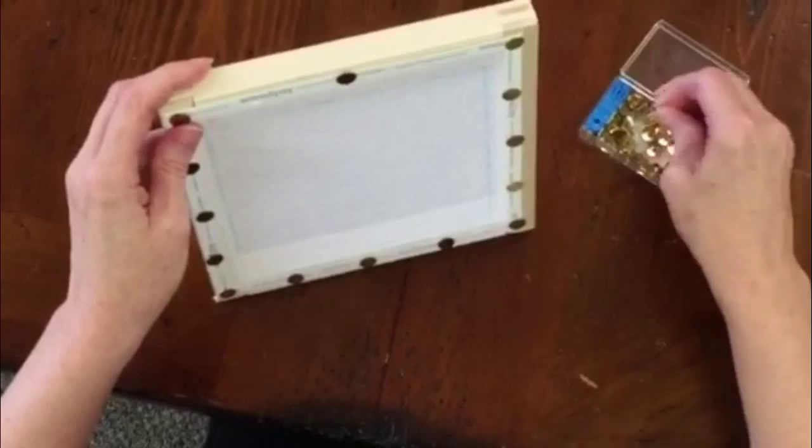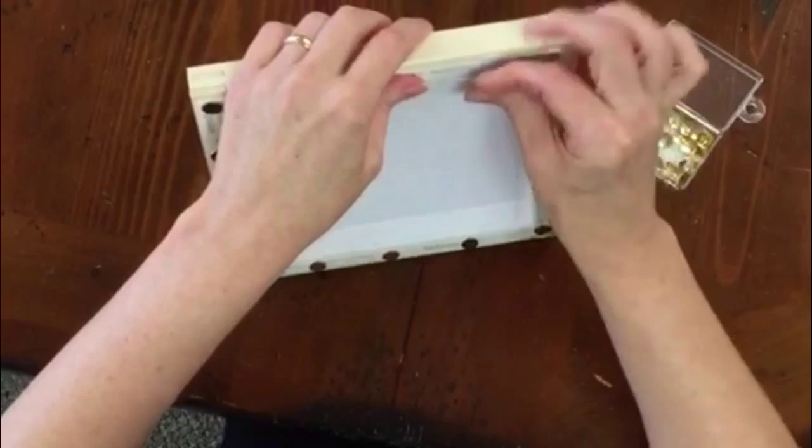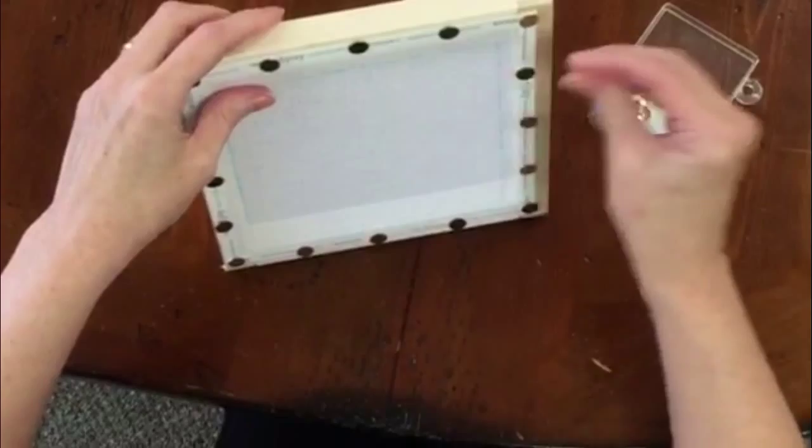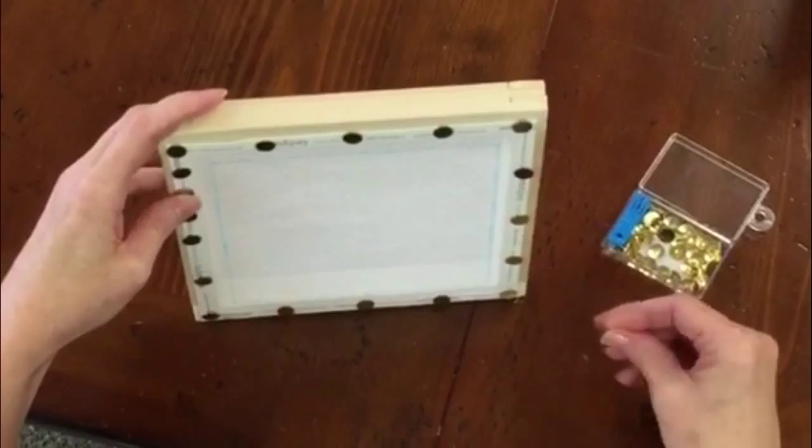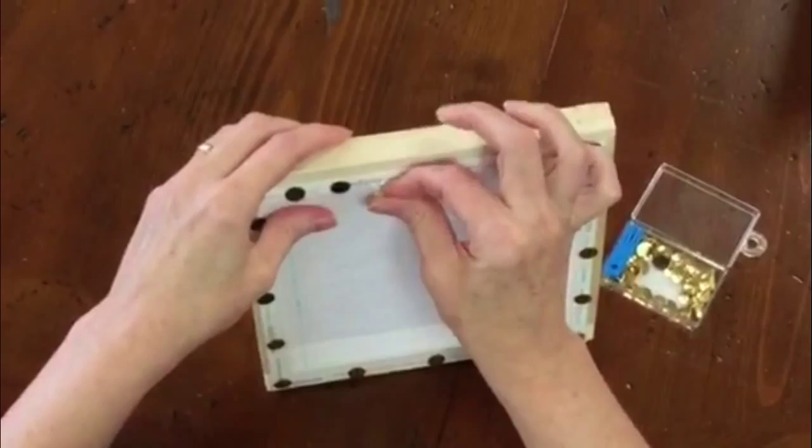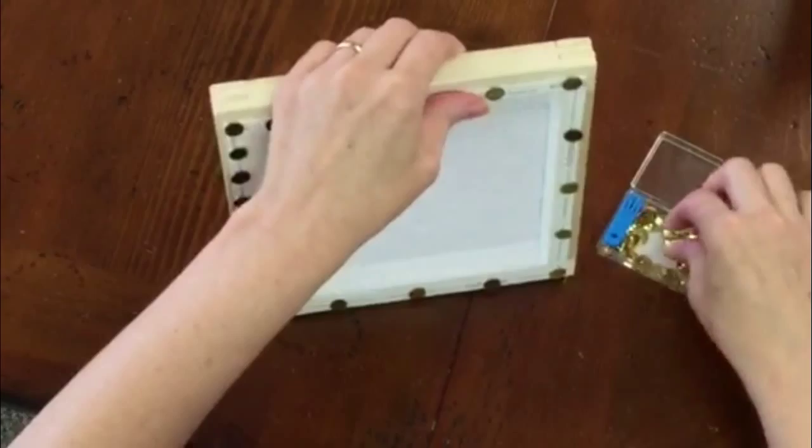It's always better to err on the side of having too many than not having enough, because that will keep your canvas secure much better if you have too many tacks than if you don't have enough. So you just continue on until you've gone all the way around all four sides.